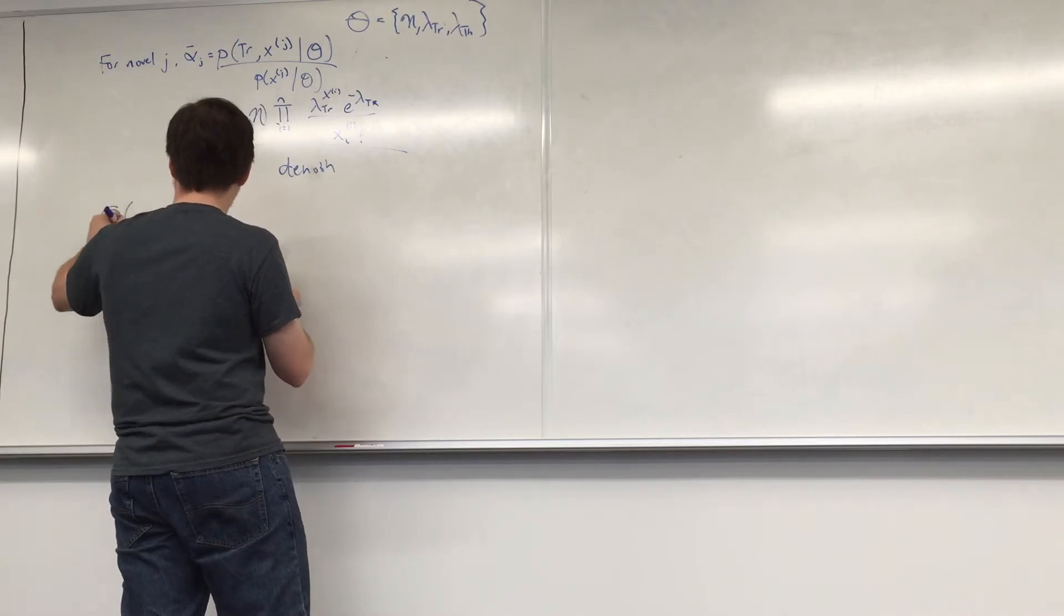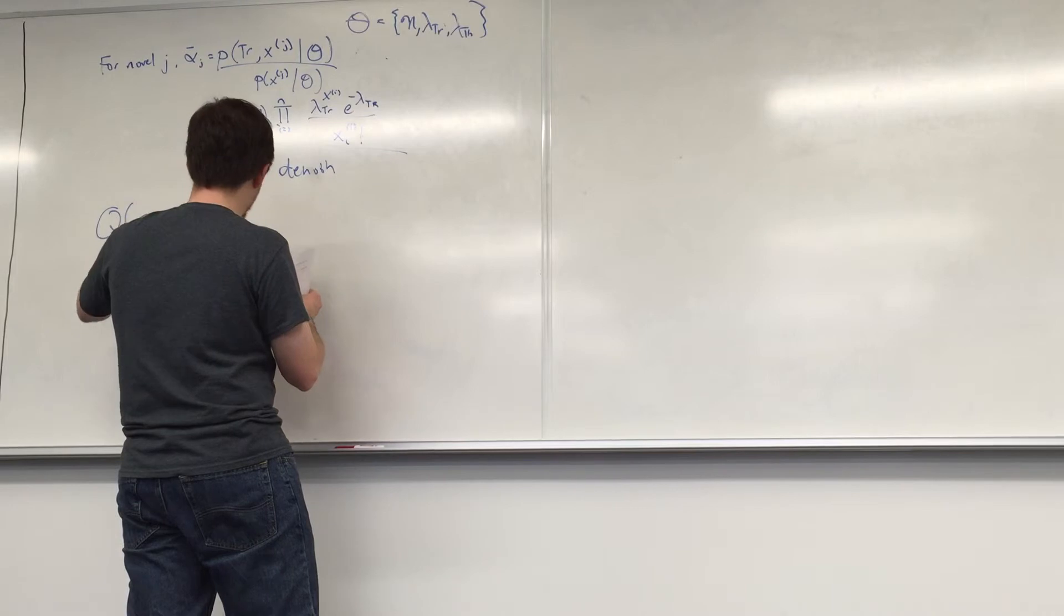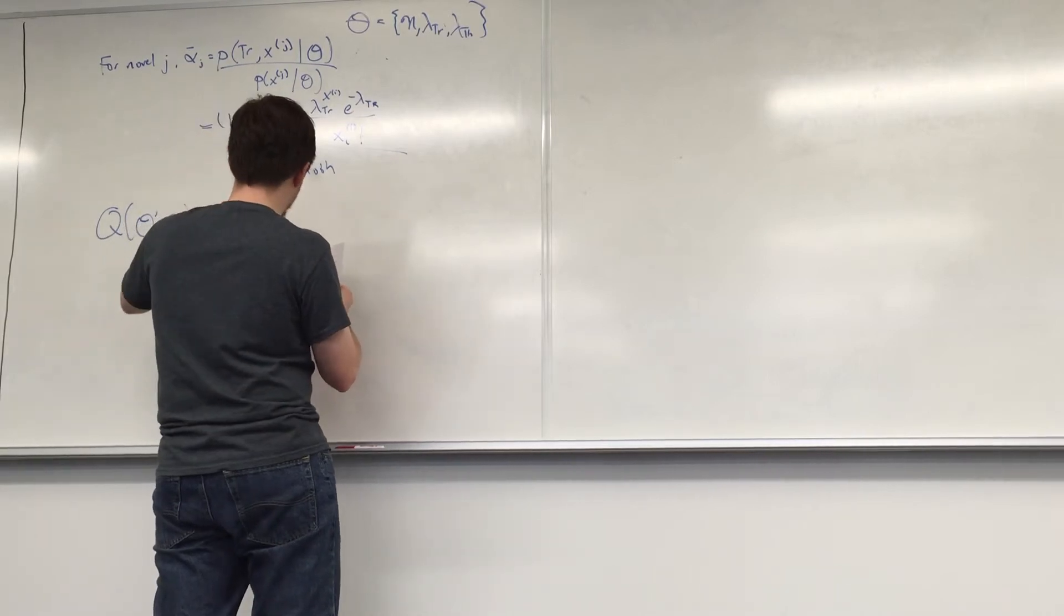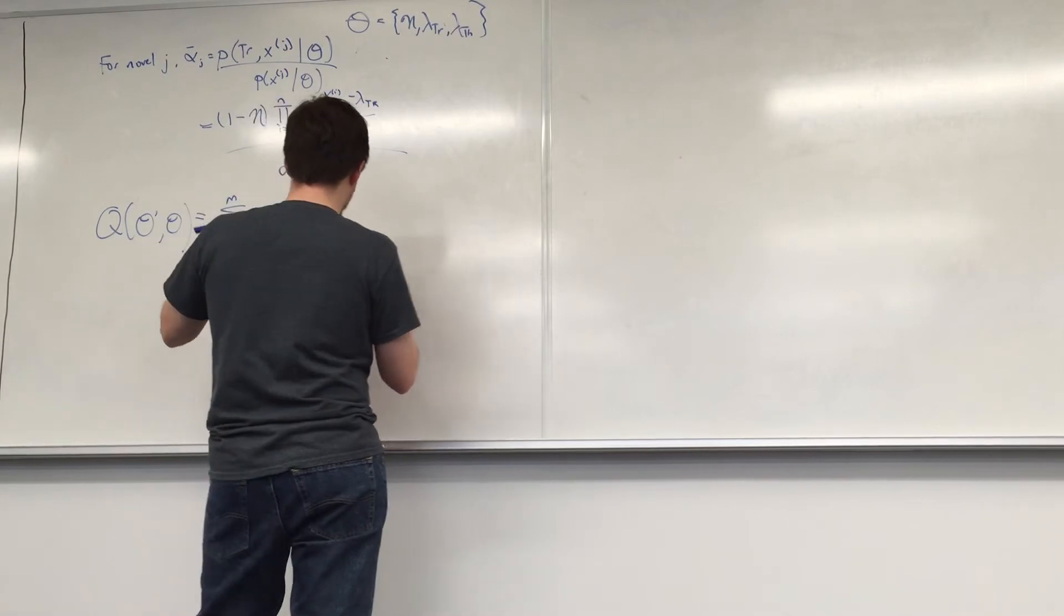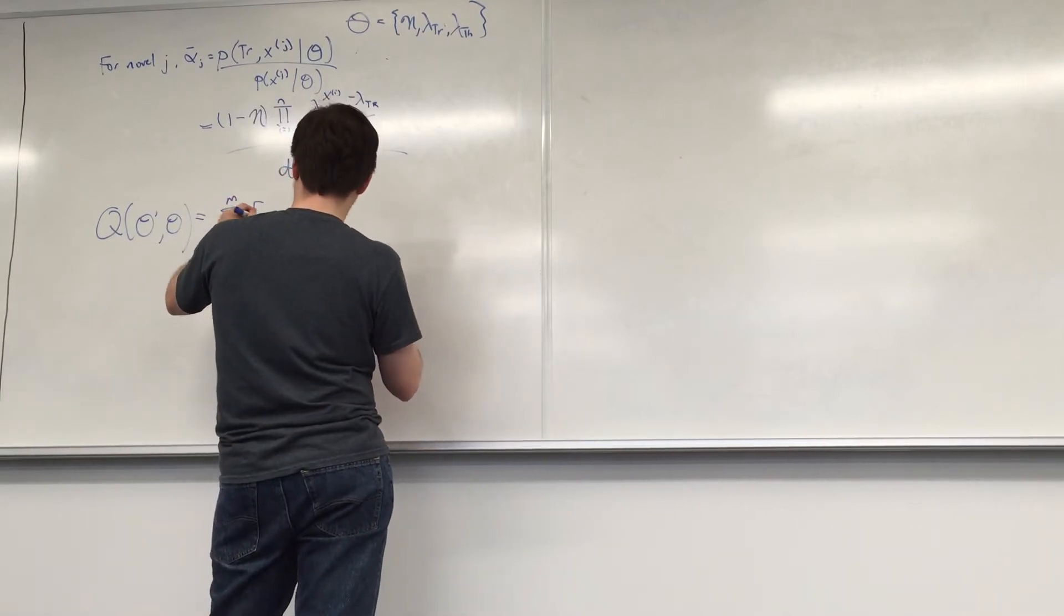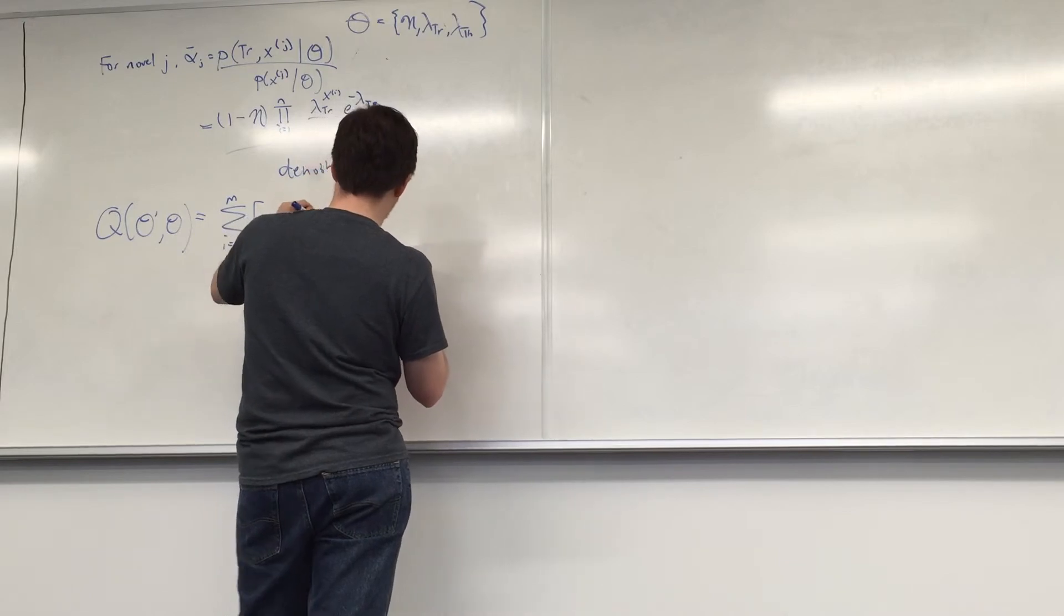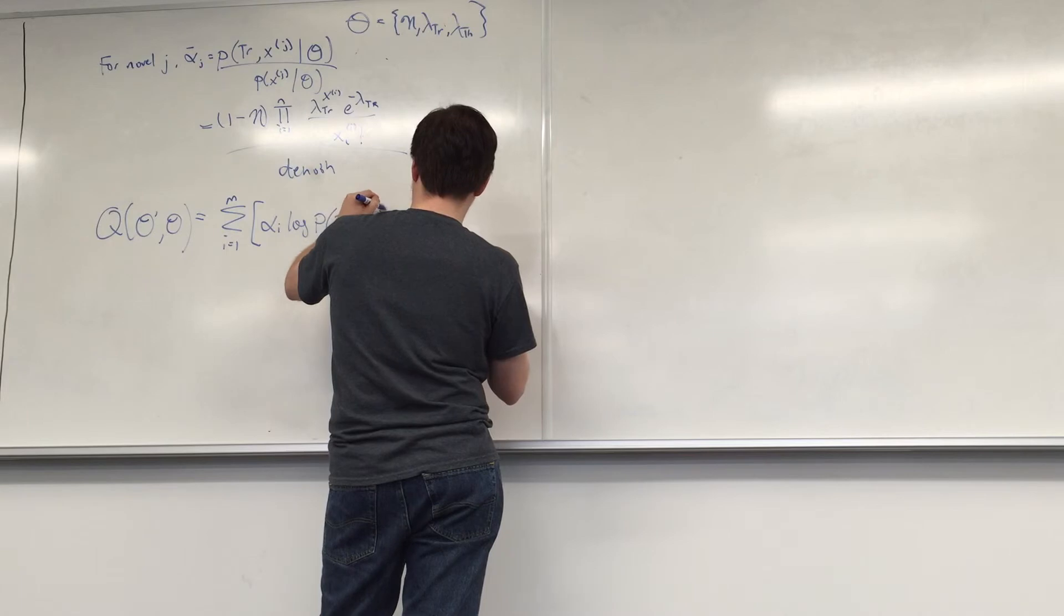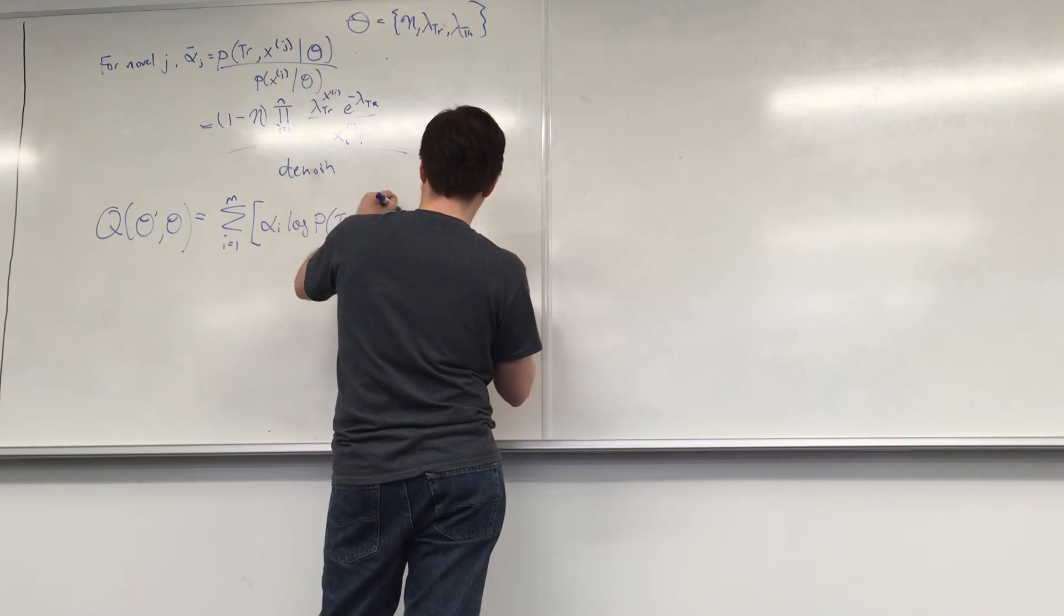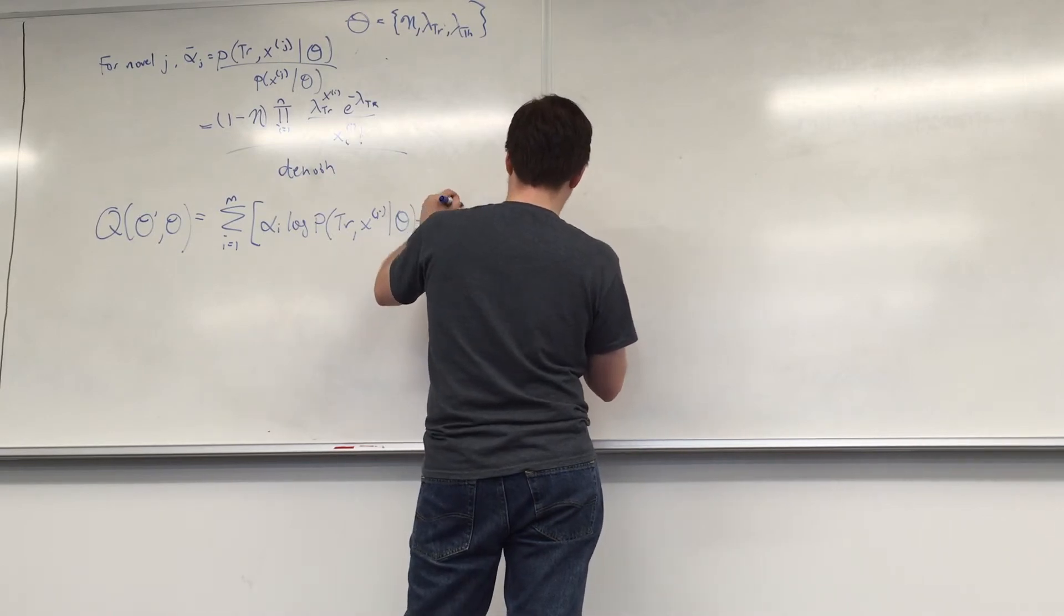And then my Q function of theta, theta prime, or whatever you like. Unfortunately, I think my notation's off and I don't have the problem in front of me anymore. But it's alpha i, log p Trollope, x i, given theta, plus,